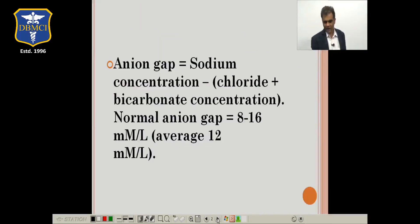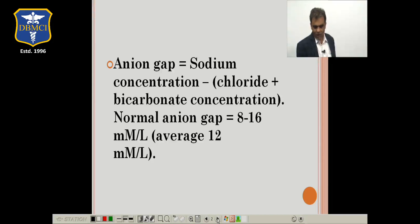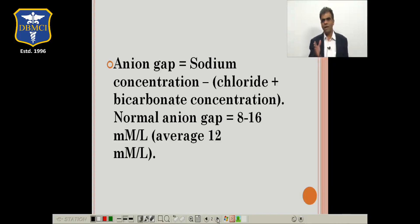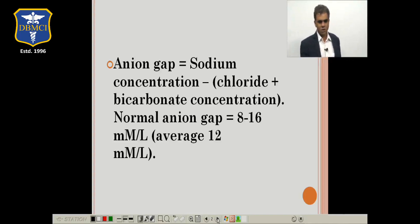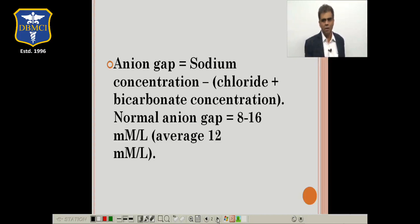Anion gap is sodium concentration minus chloride and bicarbonate concentration; normally it is around 8 to 16, average around 12. In metabolic acidosis, the anion gap can be increased, decreased, or normal. The anion gap remains normal when bicarbonate decreases with a parallel increase in chloride.